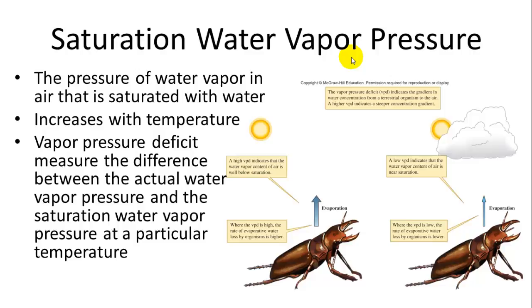So the pressure of water vapor in the air that is saturated with water is the saturation of water vapor pressure. And it increases with temperature. And the vapor pressure deficit, or the difference between the actual water vapor pressure and the saturation water vapor at a particular temperature, is going to affect organisms because the difference between their internal partial pressure of water and evaporation is going to increase if there's a very high vapor pressure deficit. And a low vapor pressure deficit is going to decrease the amount of evaporation, as you can see in that figure.